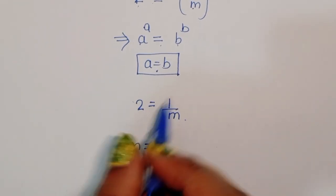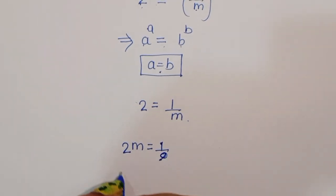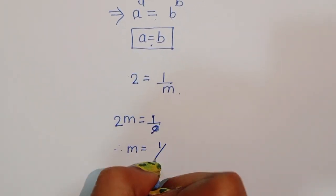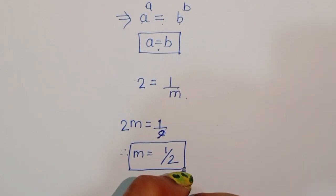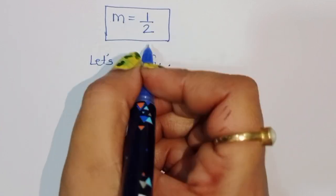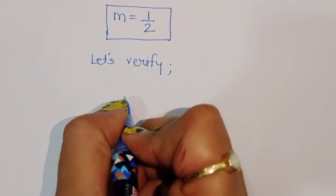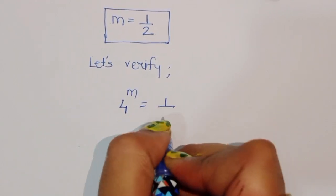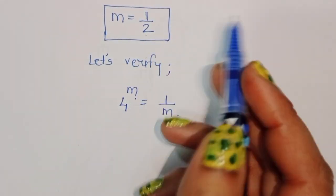Or we can write 2m is equal to 1, therefore m is equal to 1 upon 2. This is the value of m. Is this correct? Let's verify: 4 power m is equal to 1 upon m, and the value of m is 1 upon 2.